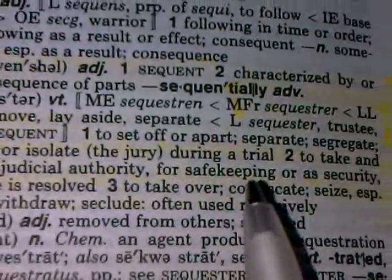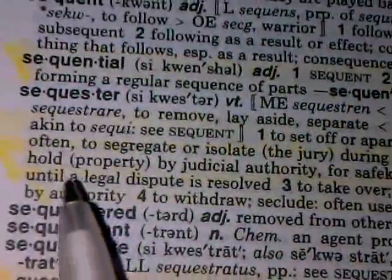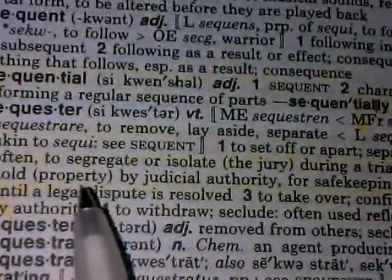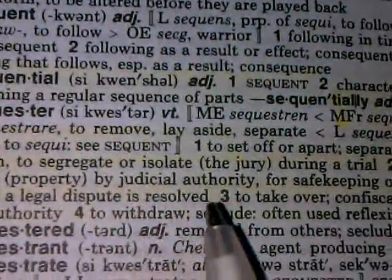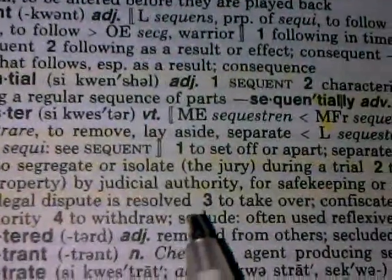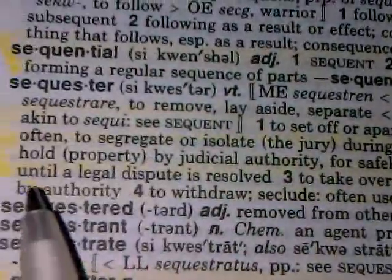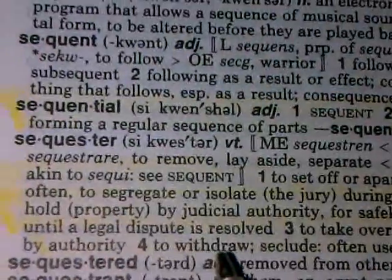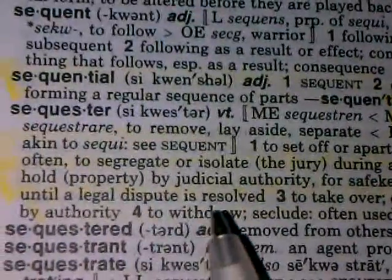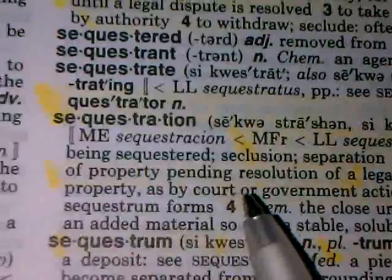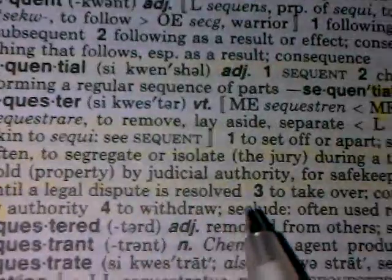The jury during a trial — have we gone through this trial about budget and all of this stuff? Two: to take hold of property, in the sense of property, by judicial authority — for safekeeping or as security until a legal dispute is resolved. Is there something else going on that we're not really being told about — a legal dispute? Why do they choose this word, sequestration? What are they secluding or moving off to the side, moving offshore?